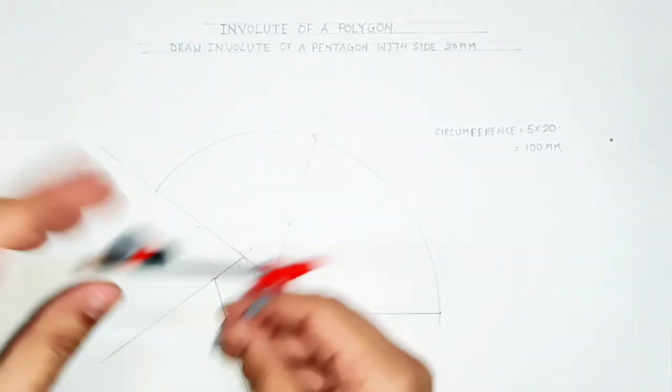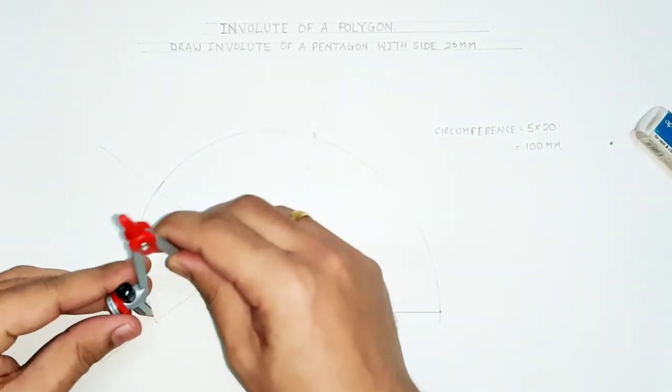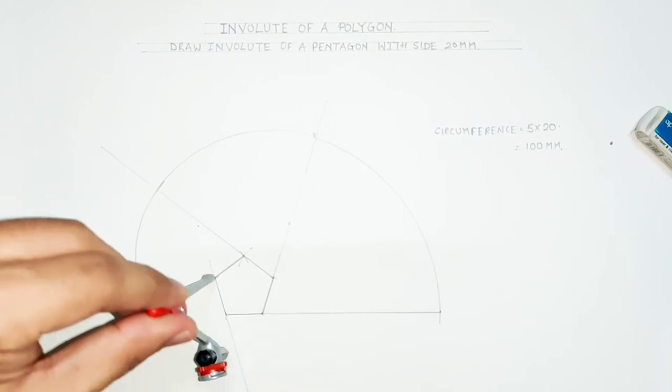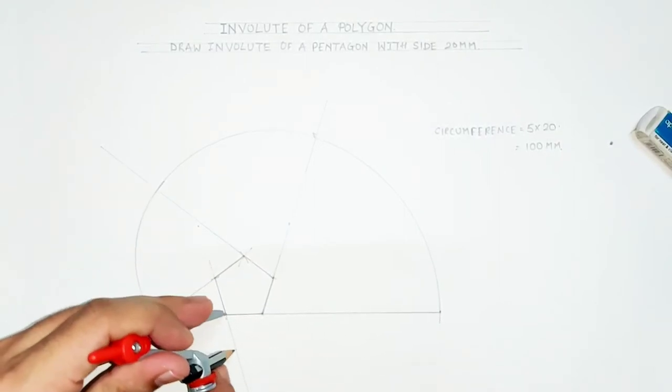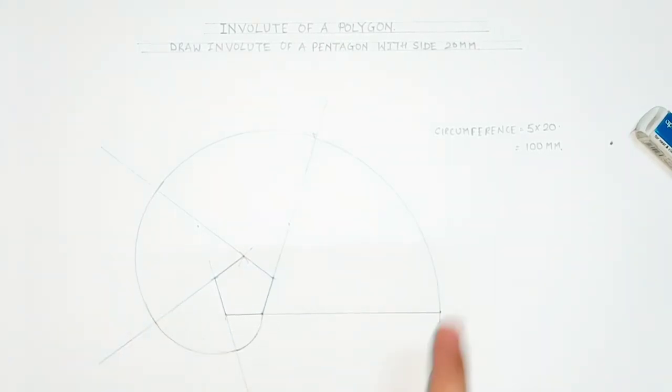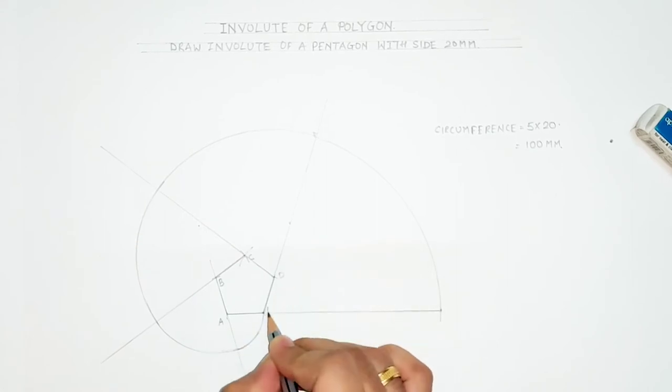Continue till you have reached the last point. Now the curve which is traced is nothing but an involute. Just mark all the points. This distance is 100 millimeter.